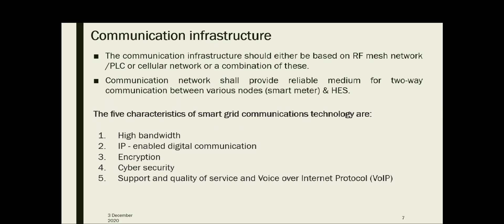Communication infrastructure is one of the main parts of an automatic meter infrastructure. It should be based upon a radio frequency mesh network, power line communication or PLC, a cellular network, or a combination of all these. The communication network shall be based on suitable standards prescribed by IEEE or IEC. It shall provide a reliable medium for two-way communication between various nodes — not just from smart meters to the utility, but also with the consumer.